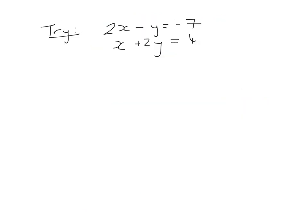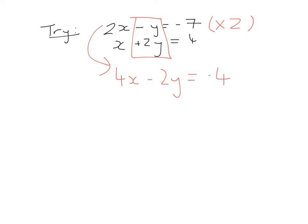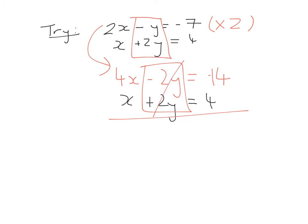I'd like you to have a go at this question — pause the video, try it in your copy, then play the video to check your answer. In this question I choose to eliminate the y's because one is already a minus and one is a plus. However, I need to make the top y into minus two y, so I multiply the entire top line by two, giving four x minus two y equals minus fourteen. The second line is x plus two y equals four. Adding them together, the y's cancel, and four x plus x gives five x, and minus fourteen plus four gives minus ten. Dividing by five, x equals two.